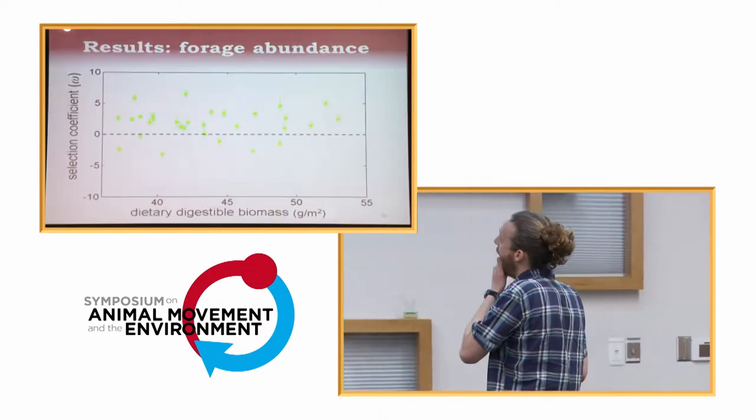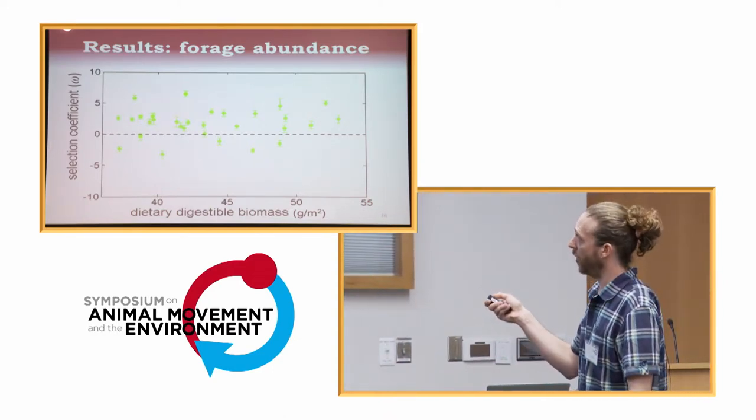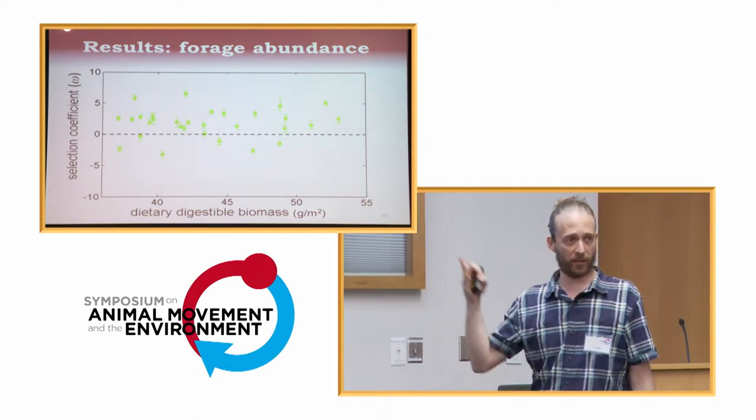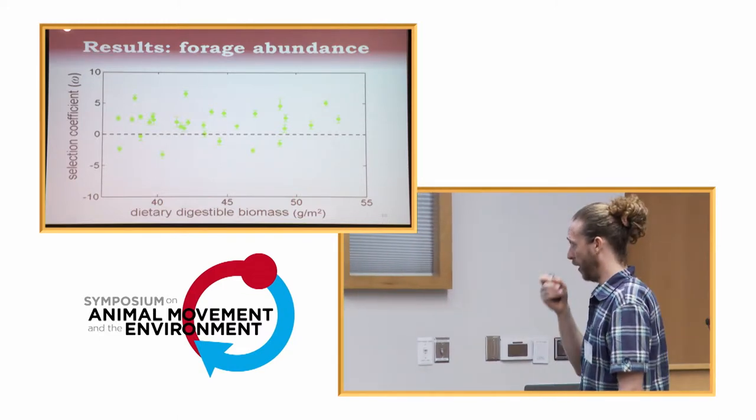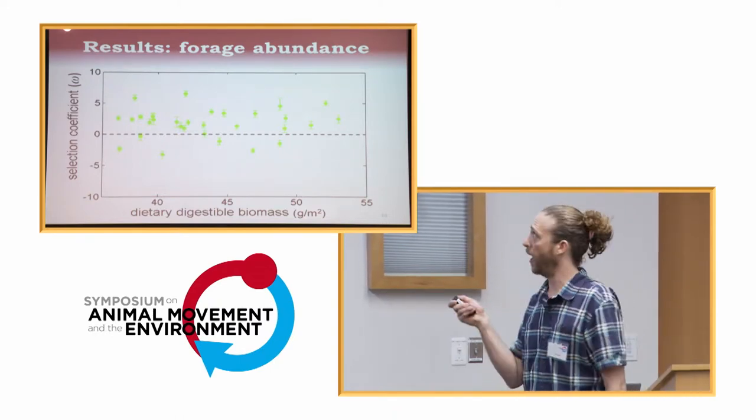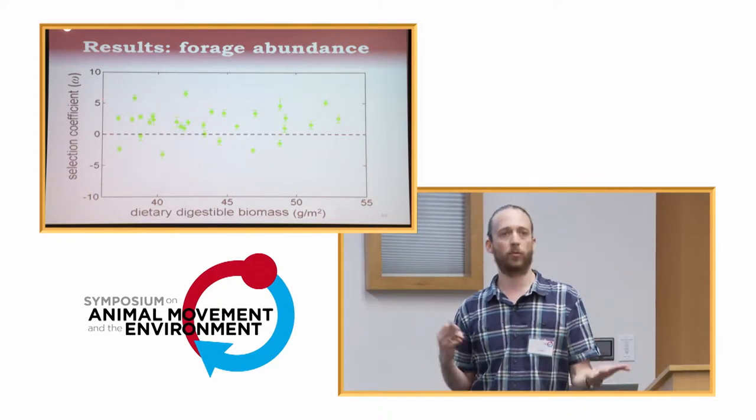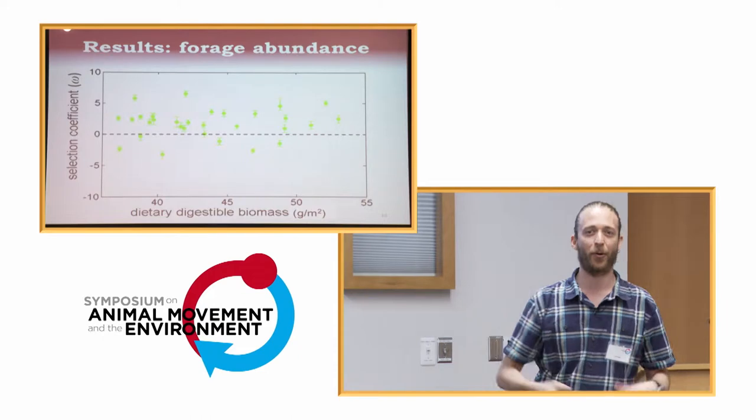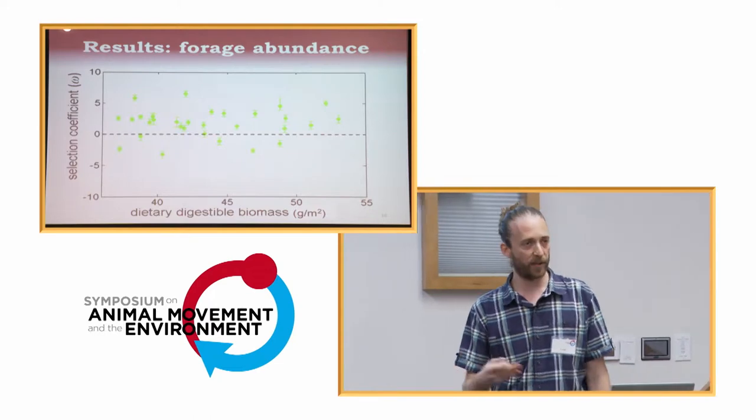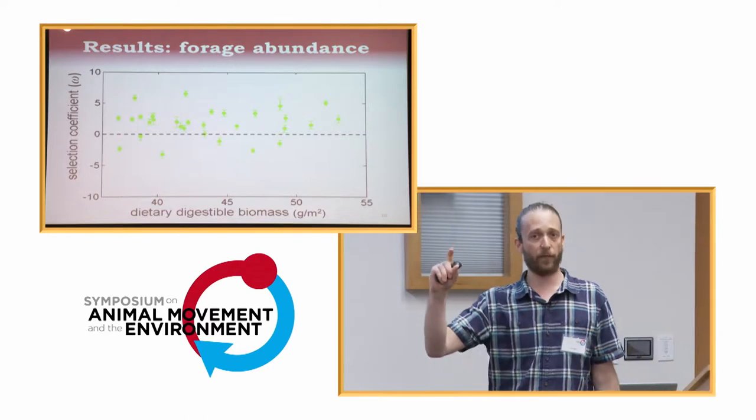Results. I'll start with the ecological part. So these figures will all look the same, or more or less the same. What we have here is the selection coefficient. In this case, for forage abundance. So the dietary digestible biomass. This is measured in grams per square meter. And each dot here is an individual. So we have 30 individuals. Zero is indifference. And those of you who deal with resource selection functions know that if you have zero, the animal is not responding to that habitat. If we have a positive value, the animal is selecting for. If we have a negative value, the animal is selecting against. Confidence bands are taken from the posterior distribution.